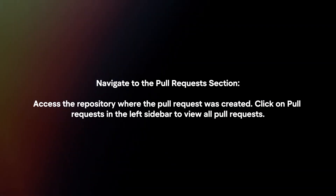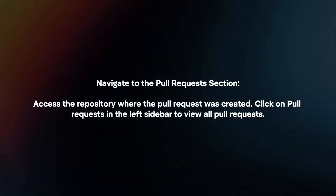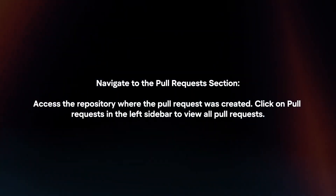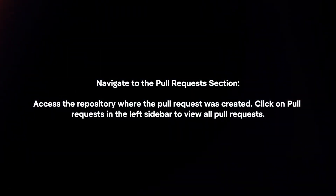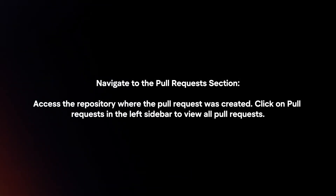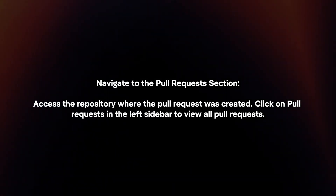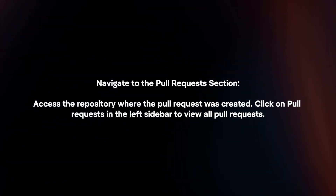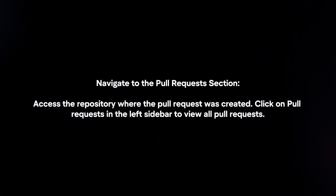Navigate to the pull request section. Access the repository where the pull request was created, then click on Pull Requests in the left sidebar to view all pull requests.